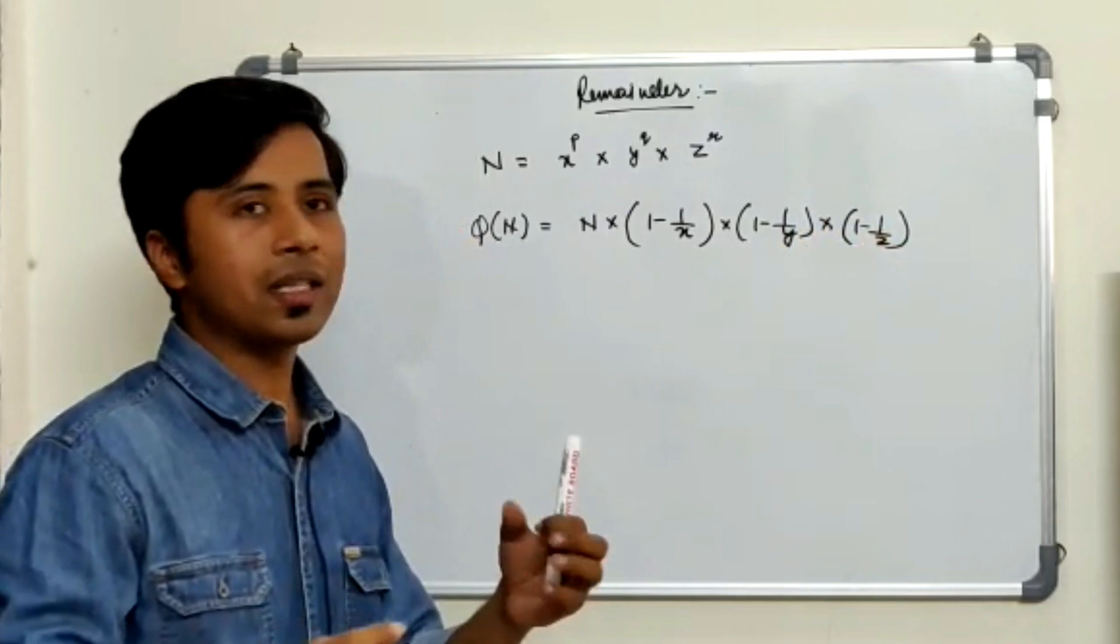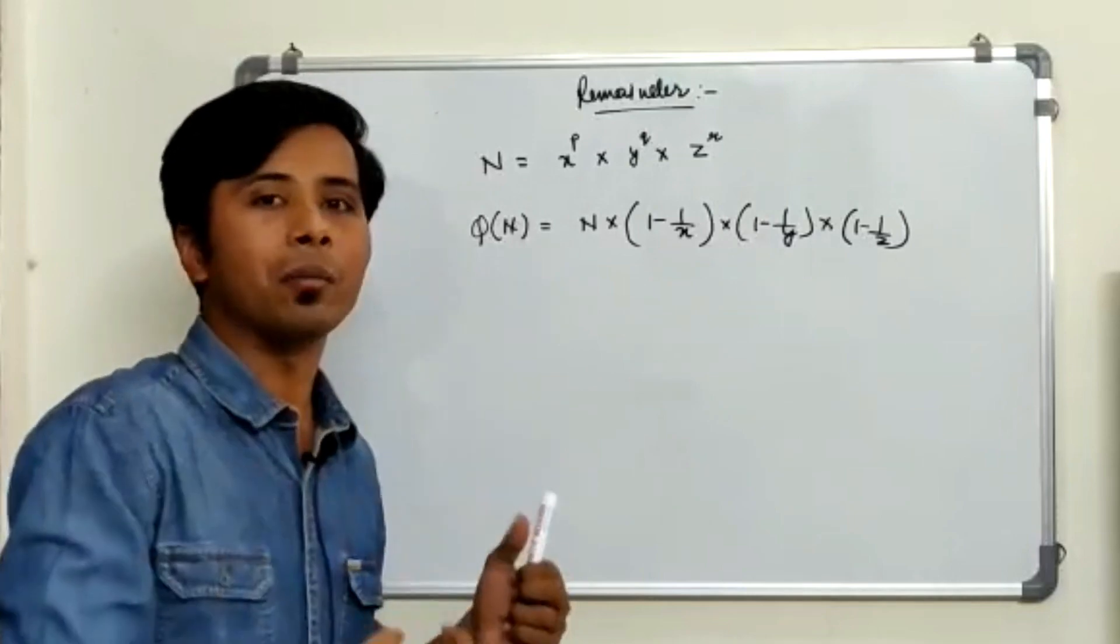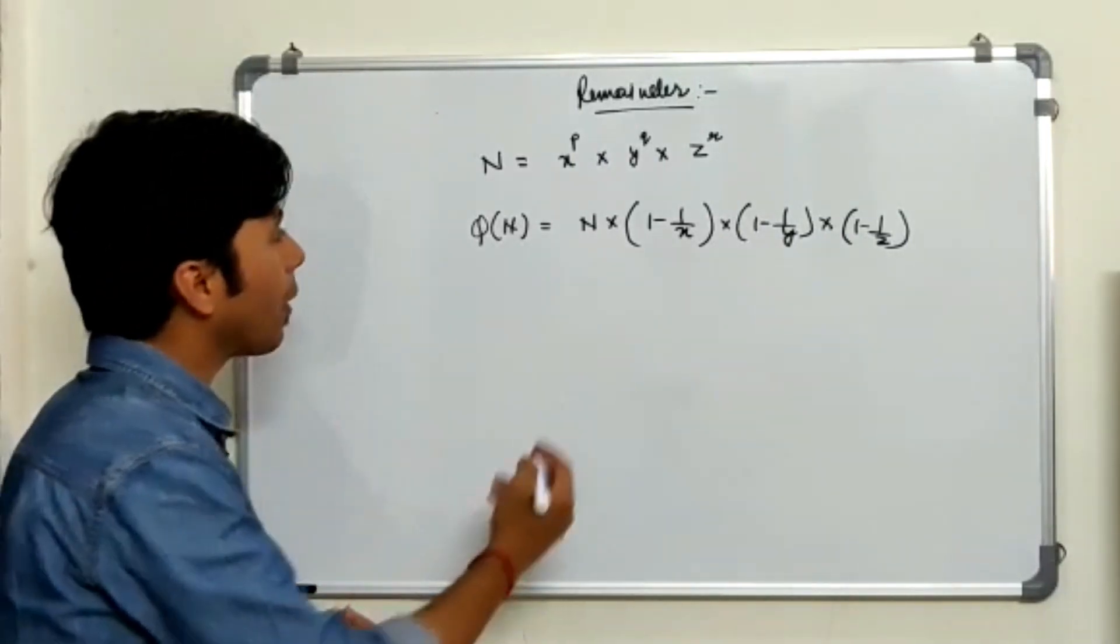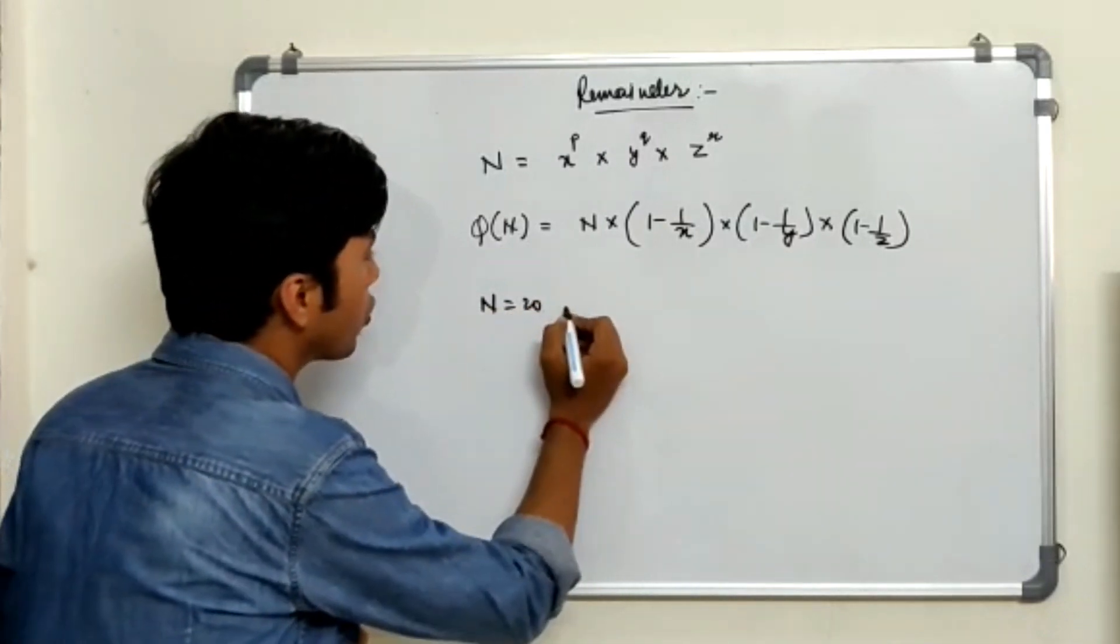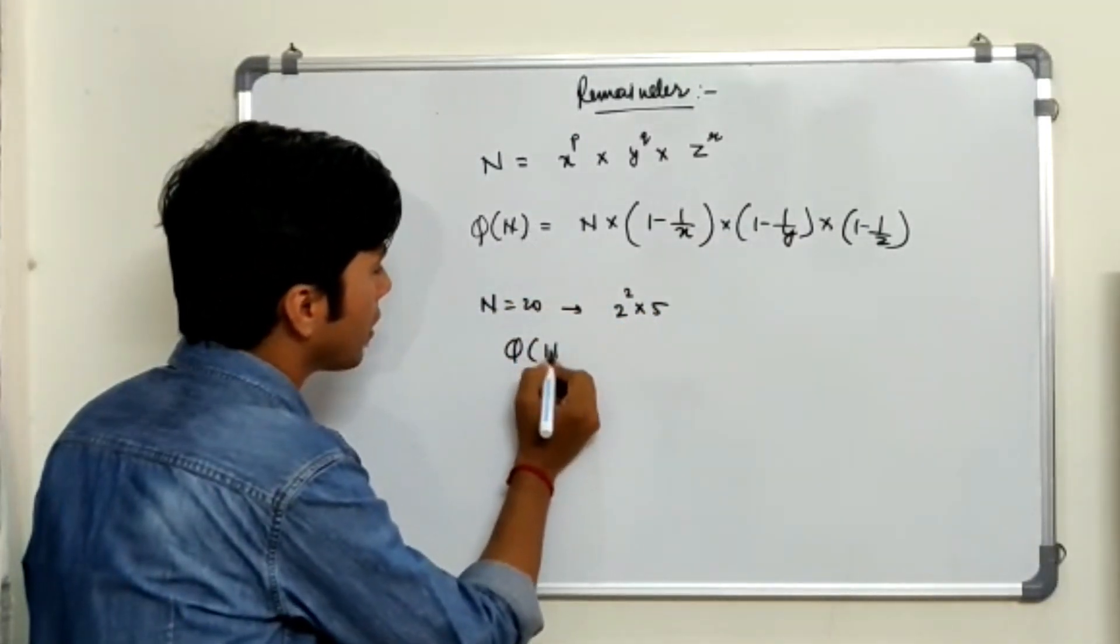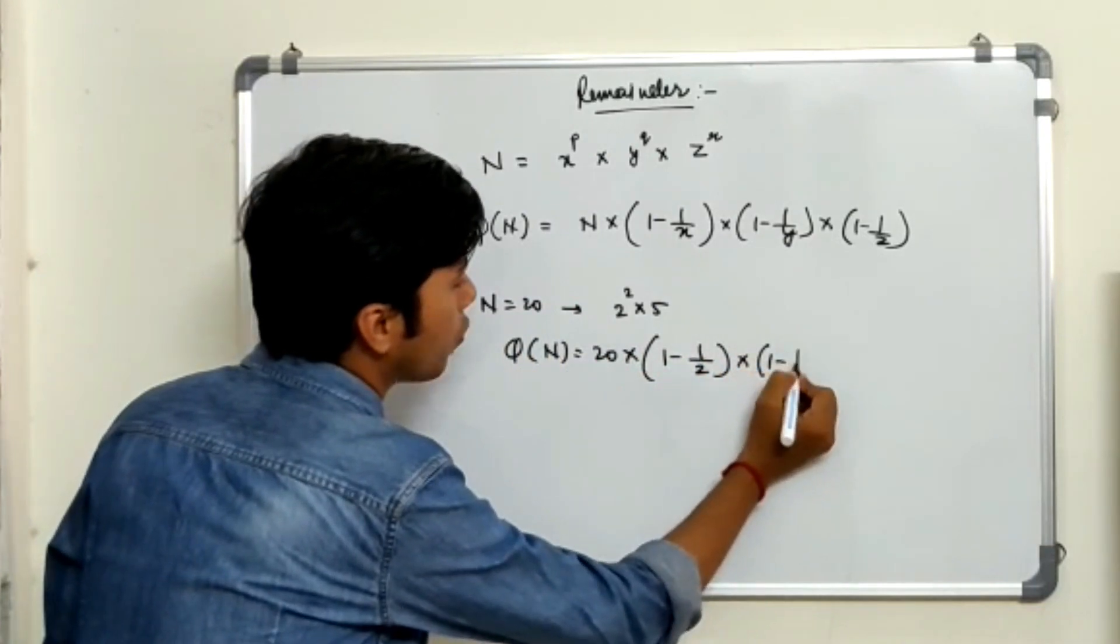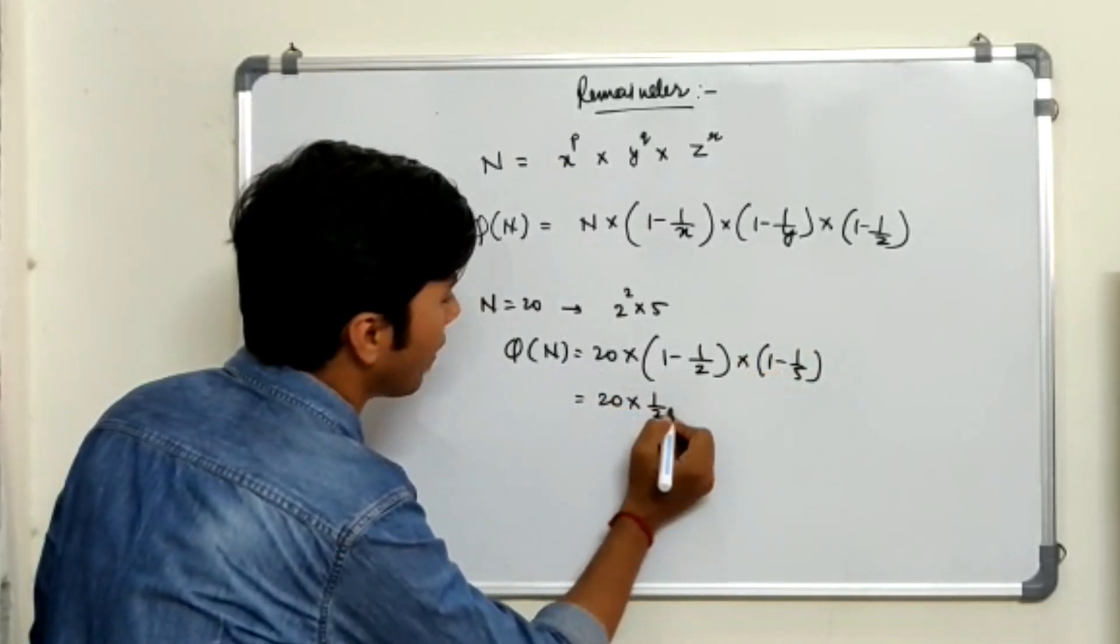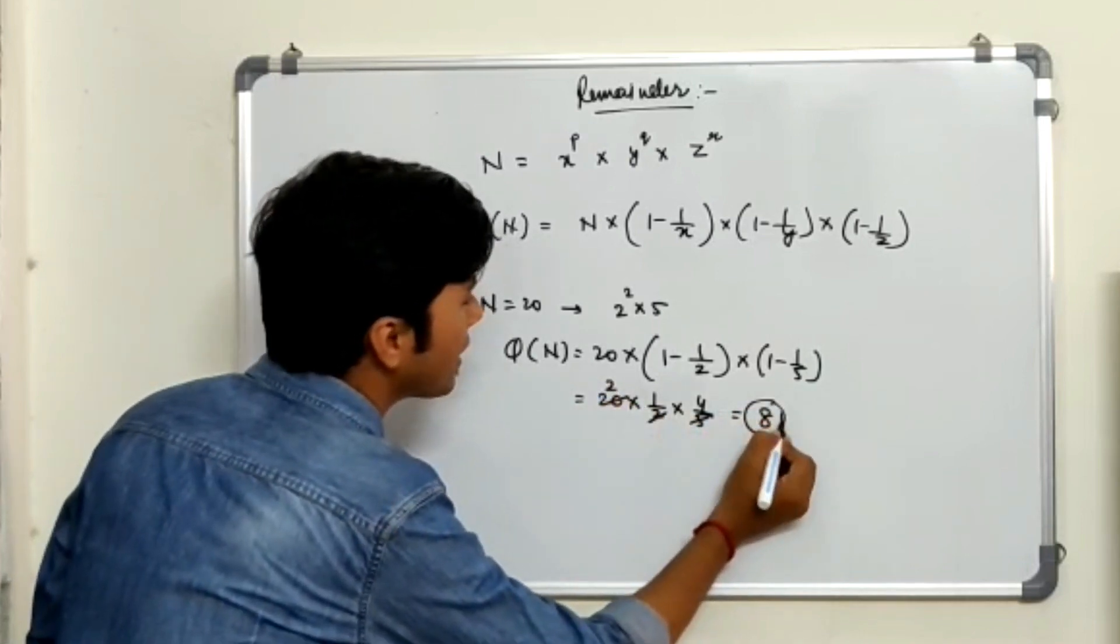Now let me explain with an example. Let's say if I take a number as 20. So this is nothing but your 2 square into 5. Now I am finding out the totient of this n. So what is happening here is 20 into 1 minus 1 upon 2 into 1 minus 1 upon 5. So 20 into I am getting this as half and I am getting this as 4 upon 5. So when I cancel this up, I am getting this nothing but 2 times 4 which is 8. So what is this 8 actually?